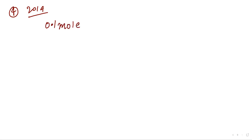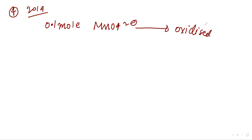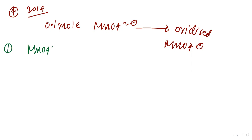Now look at the fourth one, asked in 2014. When 0.1 mol of MnO₄²⁻ is oxidized, the quantity of electricity required will be calculated. It is converting from MnO₄²⁻ to MnO₄⁻. MnO₄²⁻ is losing 1 electron to form MnO₄⁻.